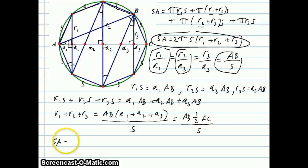So we have the surface area is 2πS times AB times 1/2 AC over S. Now I'm going to simplify this a bit because the S's can cancel out and the 2's can cancel out. Now I'm going to replace AC with 2R because this time the R, this is a new R, this is the actual radius of the original circle. So now I have π times AB times 2R.